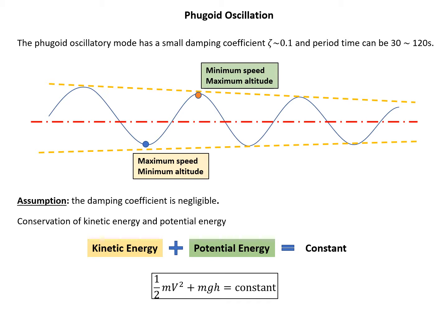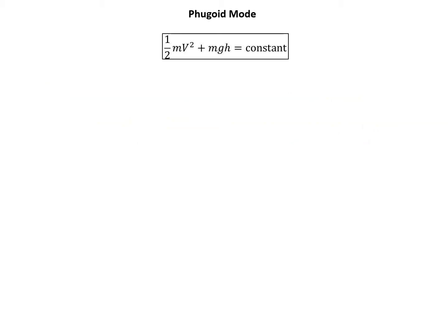Writing this down in notation, we have: one-half mv² plus mgh equals a constant — that's the energy conservation equation in integral form. Since we prefer the differential form for analysis, we differentiate each component to obtain the differential form of the governing equation for the phugoid mode.